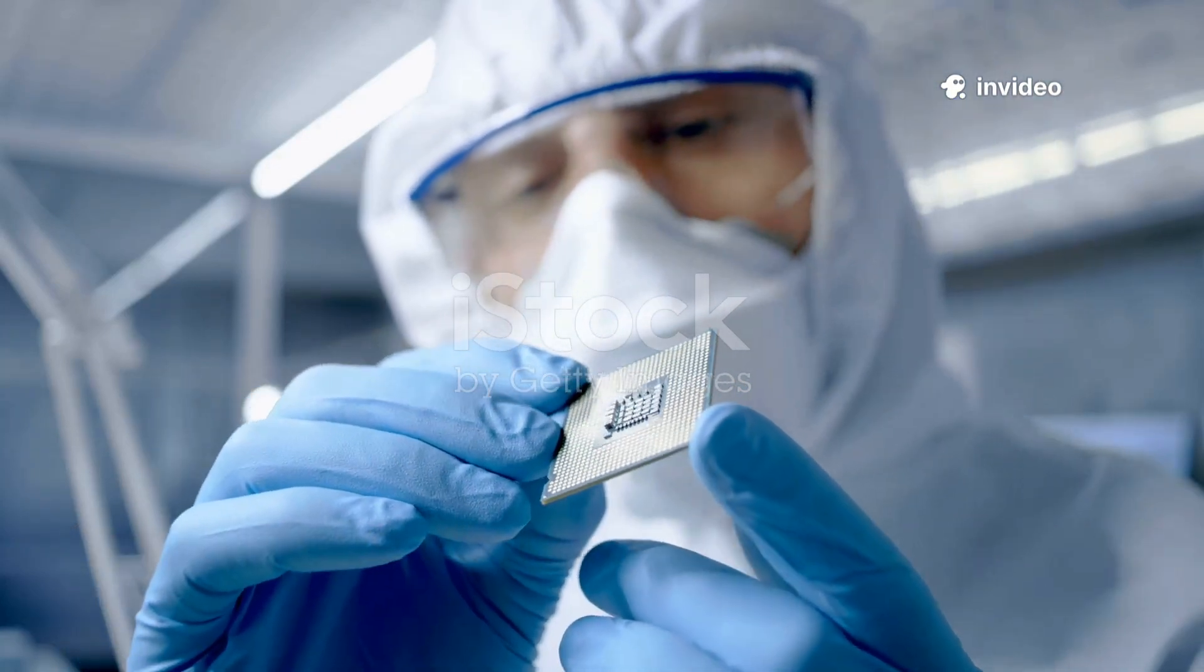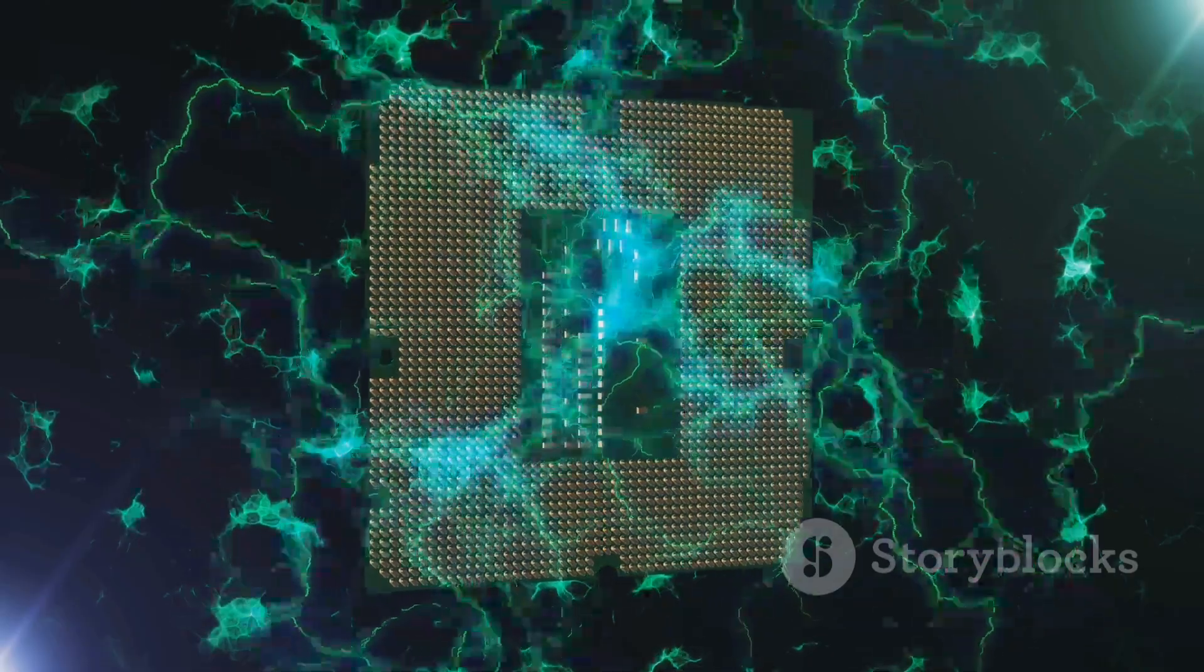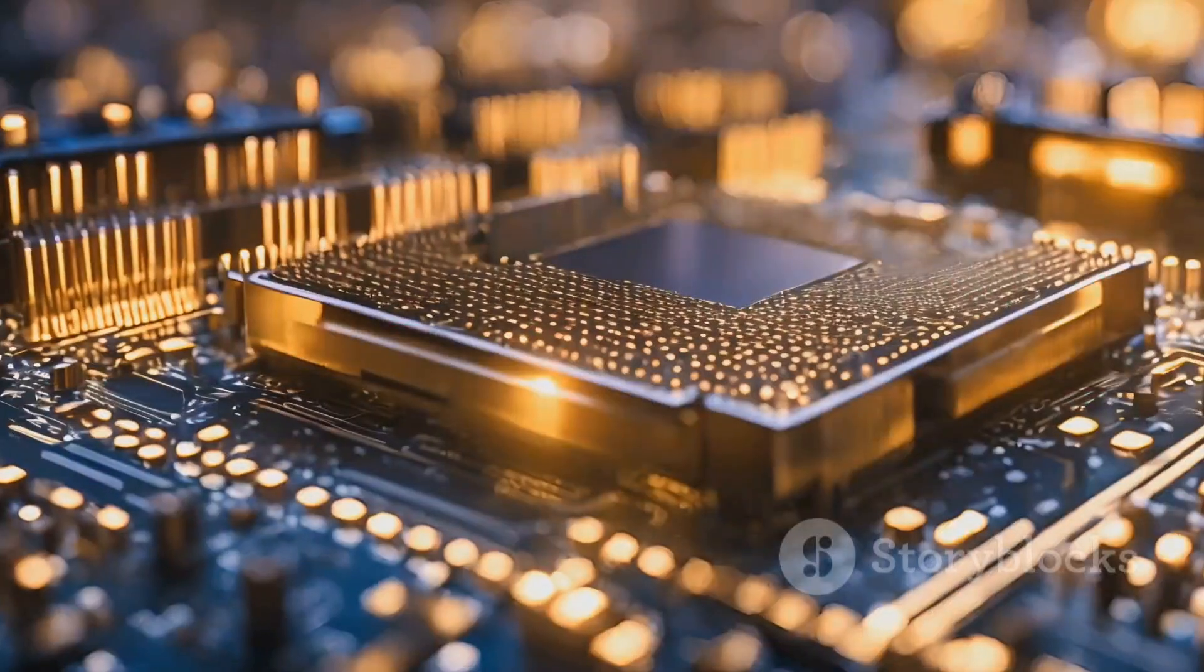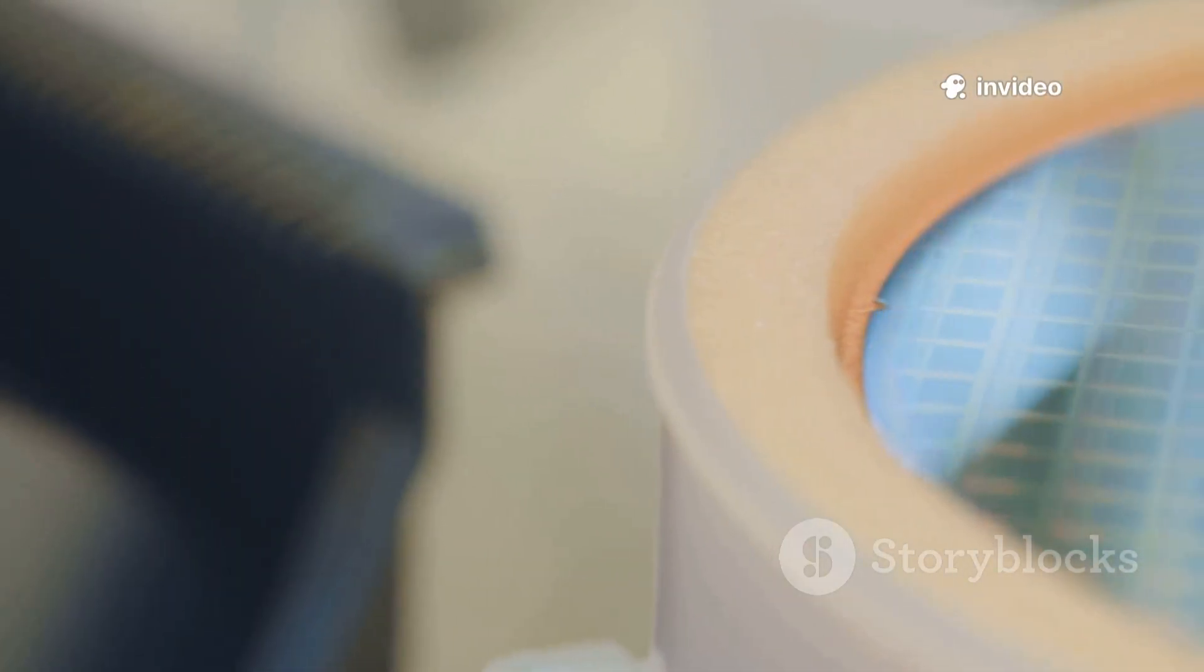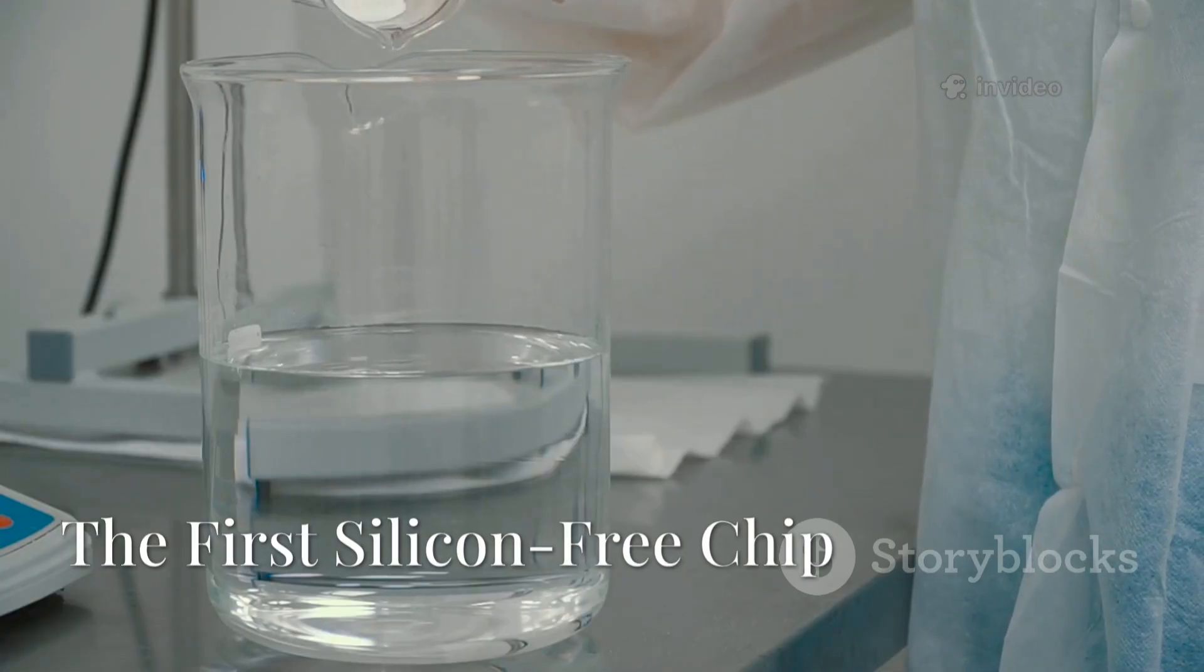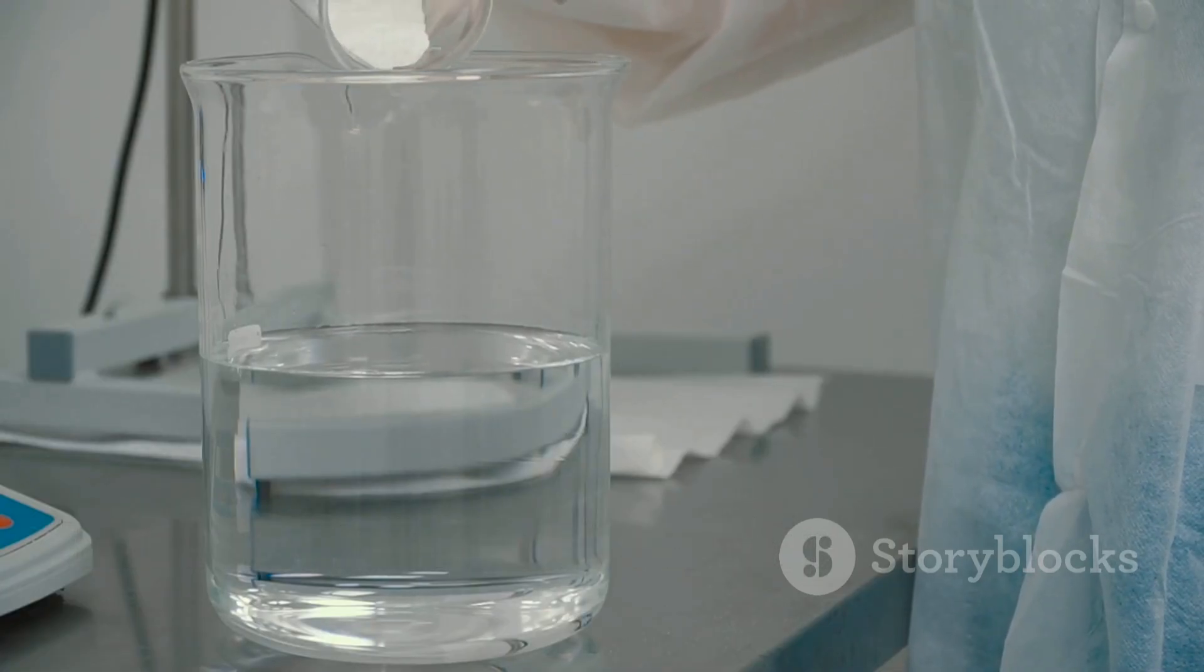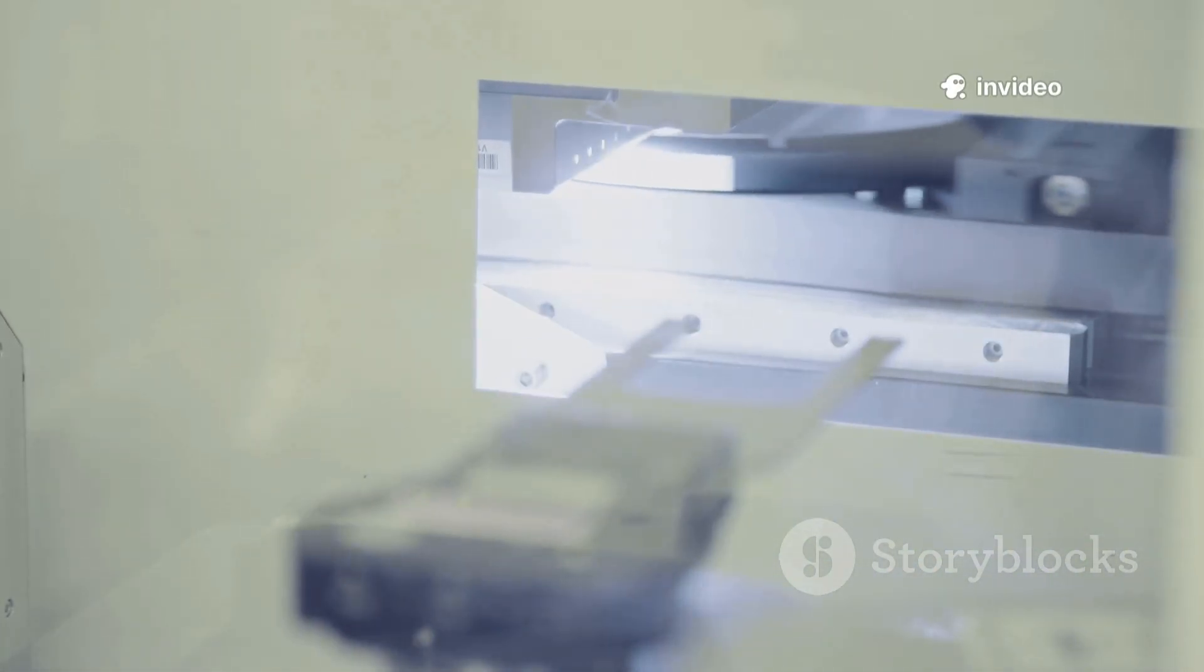But there's a problem. Bismuth naturally doesn't have a band gap. And this makes it behave like a metal. Without a band gap, there's no switching. And without switching, there's no computational logic. End of the line? No, because there's a solution. Doping. Which basically means adding chemical elements to bismuth to change its electronic structure. And that's exactly what a Chinese team did, creating the first functional bismuth-based semiconductor. The first silicon-free chip in history.